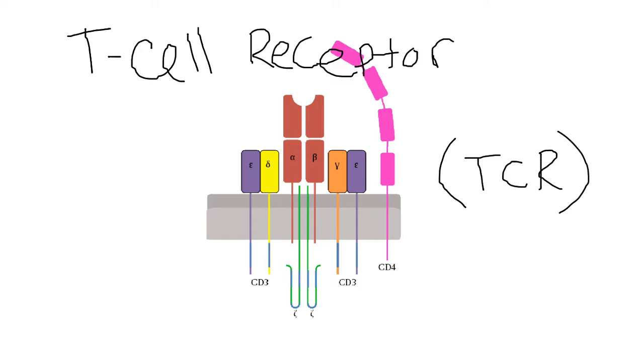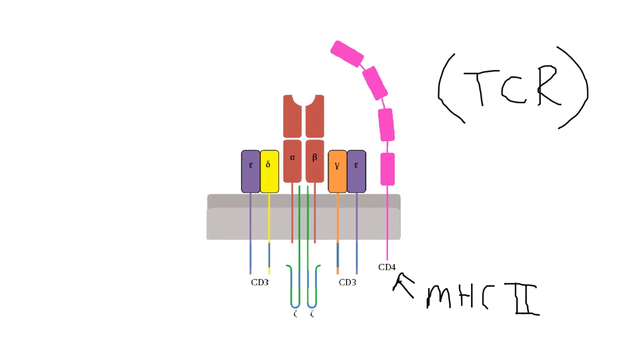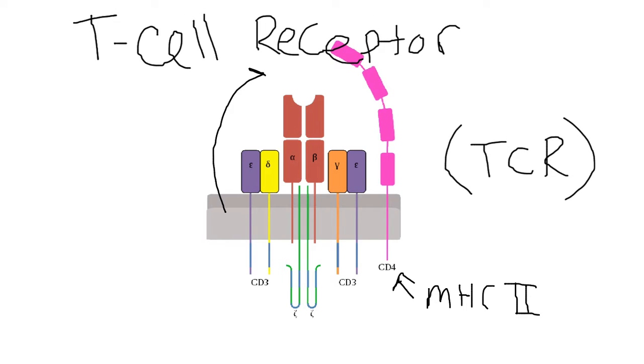Understanding this T cell receptor is vital to understanding T cell development. A couple of things I want to point out. This CD4, this is a co-receptor for the TCR. And what it will do is it will help to bind it to an MHC class II molecule. If this was a CD8, then this would help bind it to an MHC class I protein. Most importantly, remember that there's an alpha chain and a beta chain.